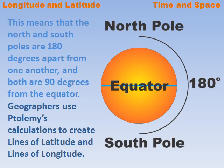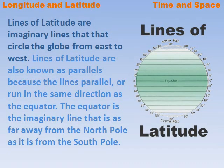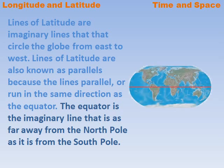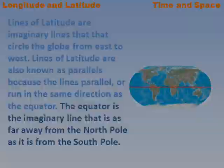Geographers used Ptolemy's calculations to create lines of latitude and lines of longitude. Lines of latitude are imaginary lines that circle the globe from east to west. They are called parallels because the lines parallel, or run in the same direction as, the equator — the imaginary line that is equidistant from both the North and South Poles.